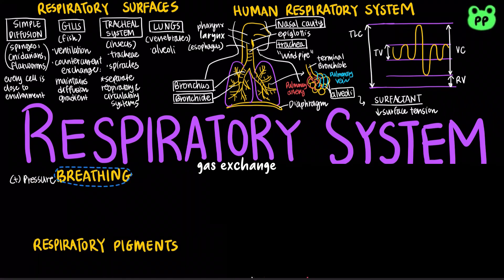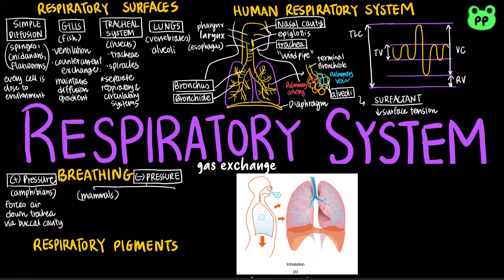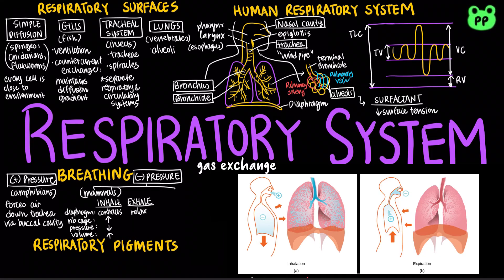Amphibians such as frogs ventilate their lungs by positive pressure breathing, which forces air down the trachea through the buccal cavity. Mammals, on the other hand, ventilate by negative pressure breathing, which pulls air into the lungs by varying volume and air pressure. During inhalation, the diaphragm contracts, the ribcage moves up, air pressure decreases, and the lungs expand. During exhalation, the diaphragm relaxes and the ribcage moves down, increasing air pressure and decreasing lung volume.